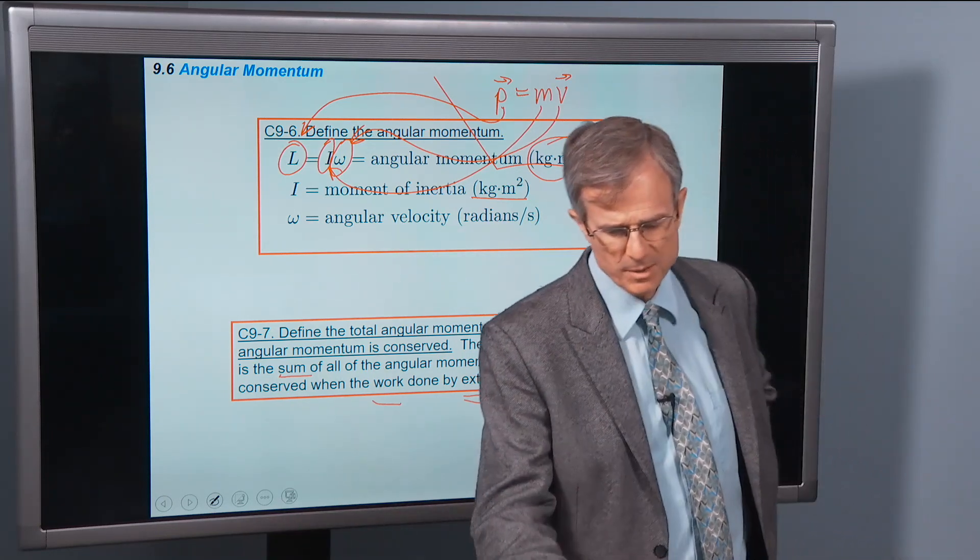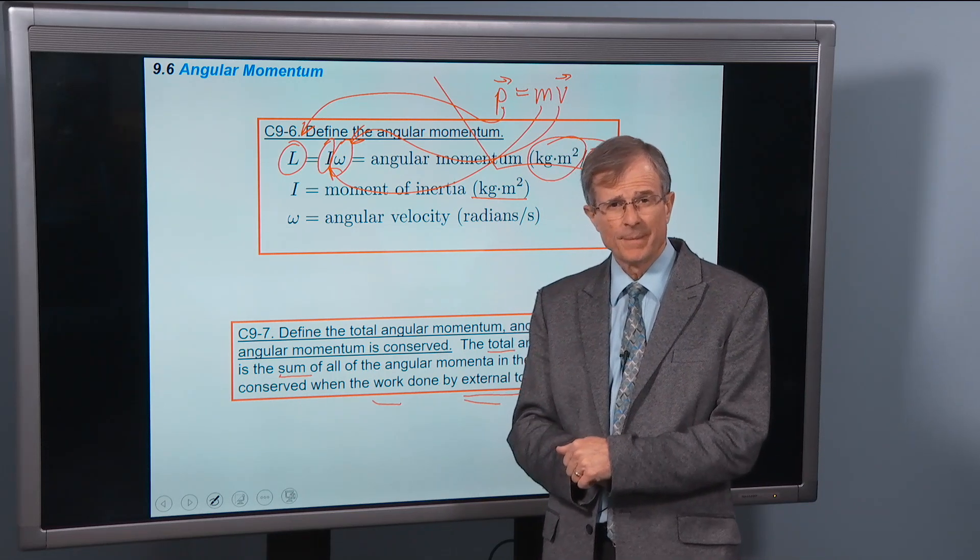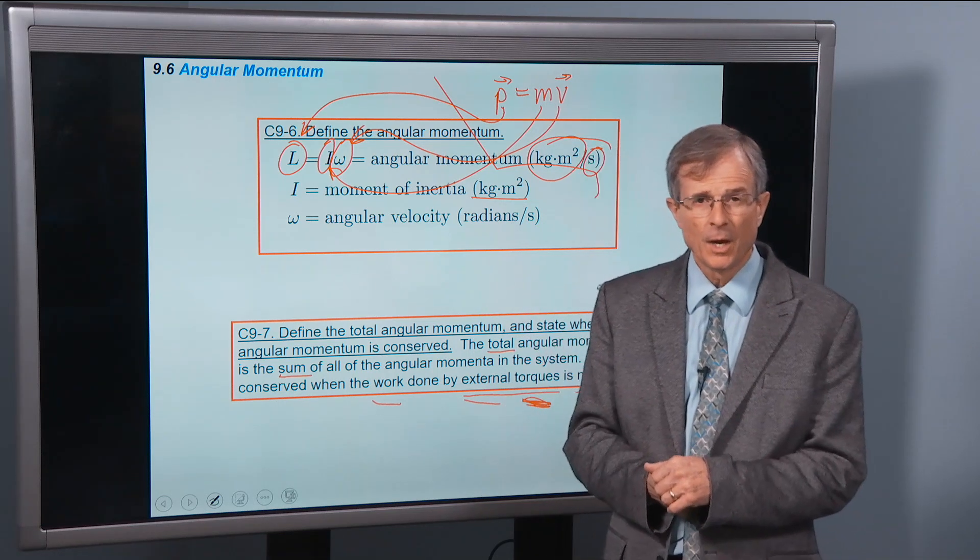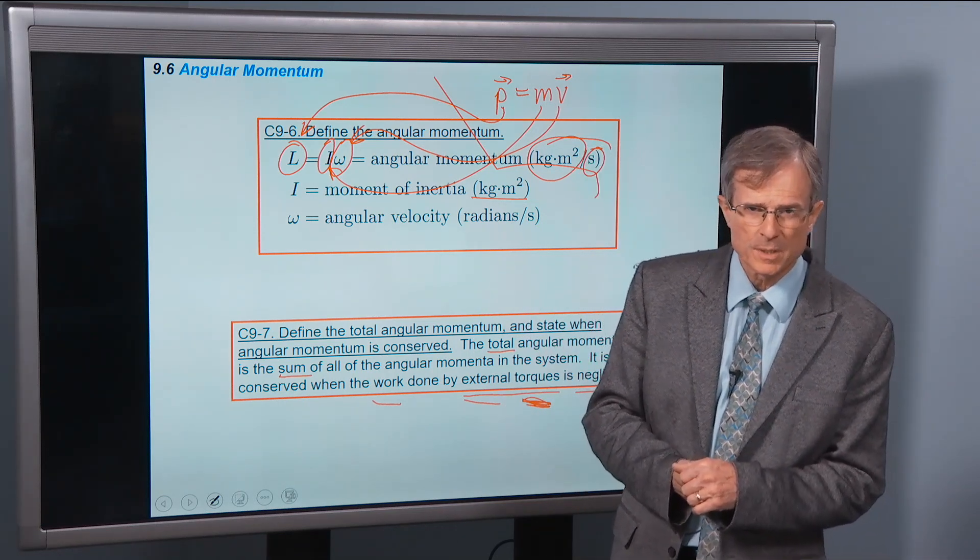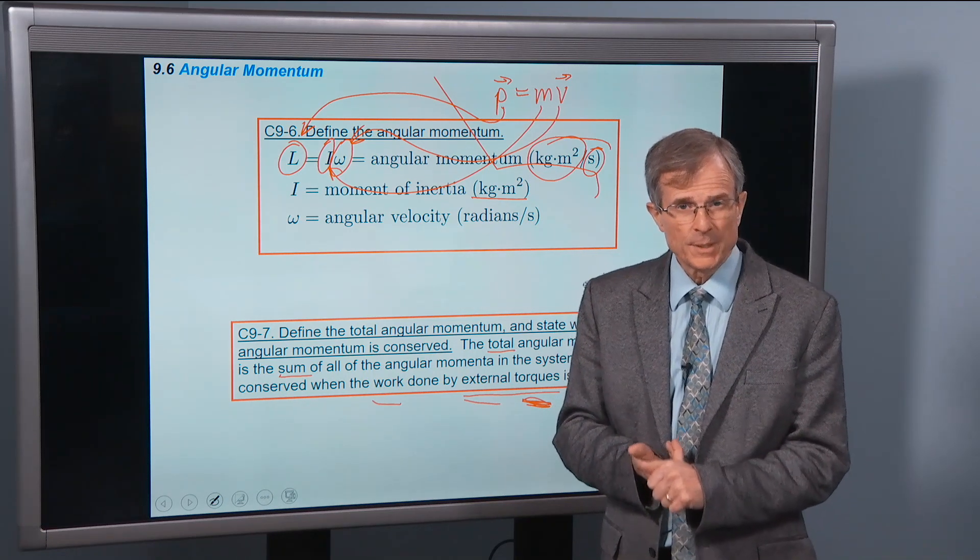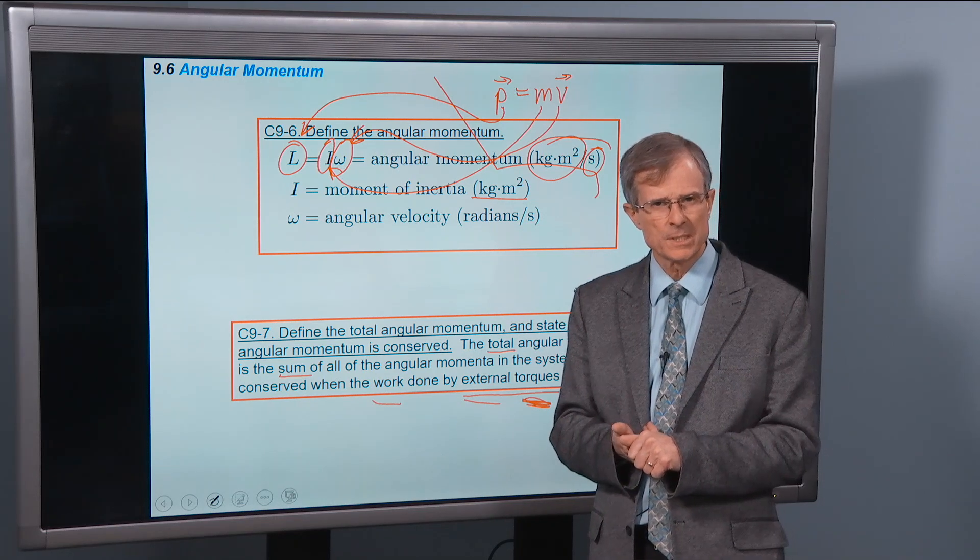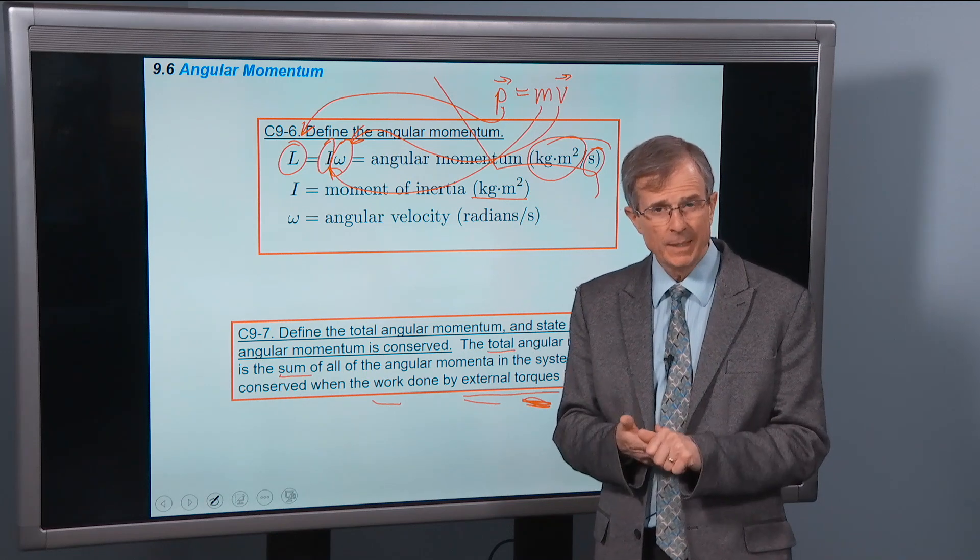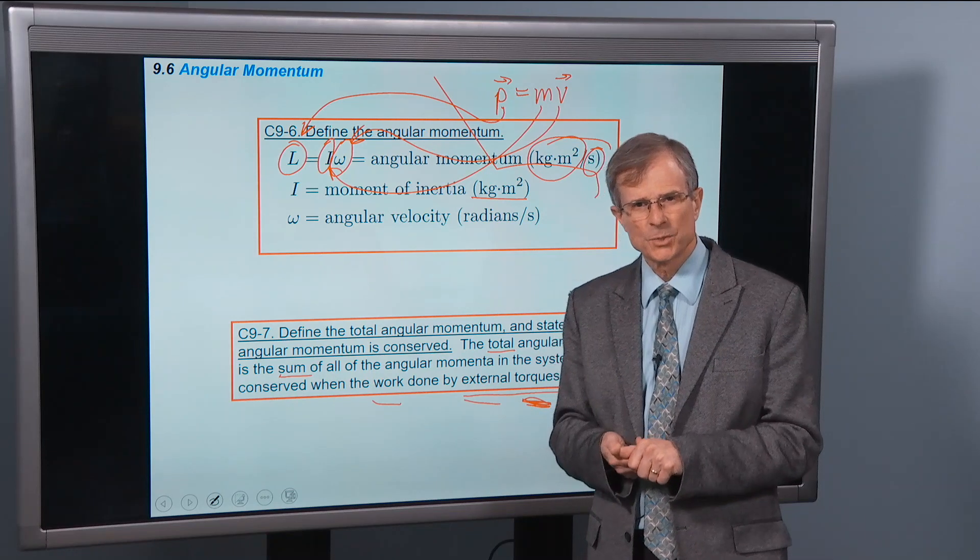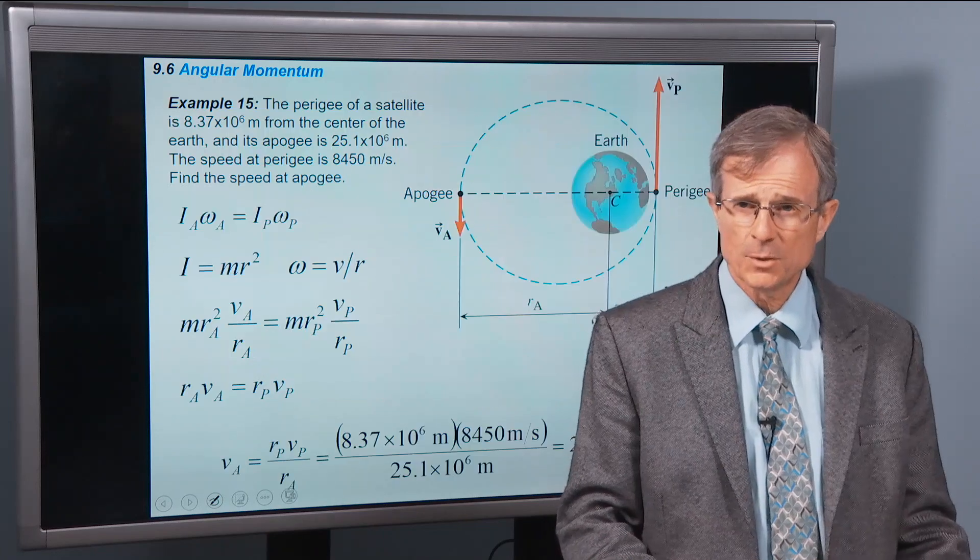You might remember that linear momentum was conserved when the work done by external forces is negligible. So now we have three different conservation laws. Conservation of energy, it's conserved when the work done by non-conservative forces is negligible. Linear momentum is conserved when the work done by external forces is negligible. And angular momentum is conserved when the work done by external torques is negligible. I'll do some examples.